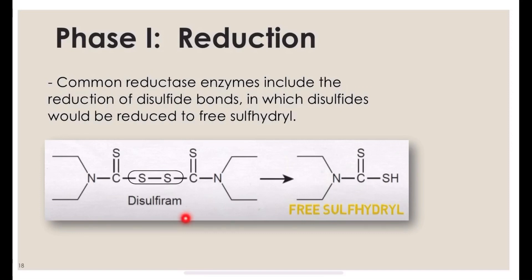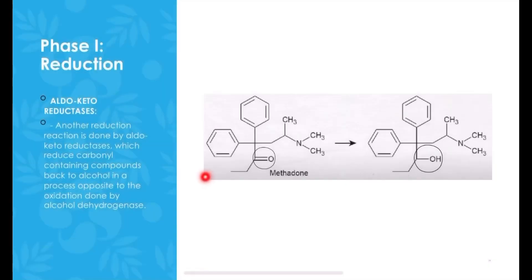The next phase 1 reaction is reduction. Common reductase enzymes include the reduction of disulfide bonds, in which disulfides are reduced to free sulfhydryl groups. Reduction also involves aldoketoreductases, which reduce carbonyl-containing compounds back to alcohols — a process opposite to the oxidation done by alcohol dehydrogenase.